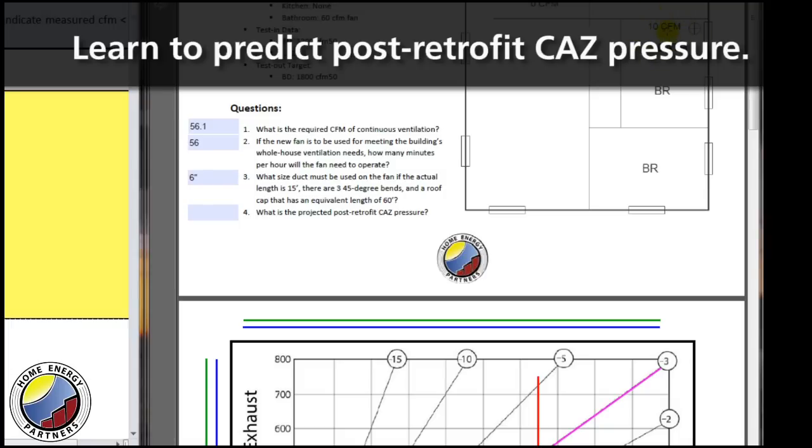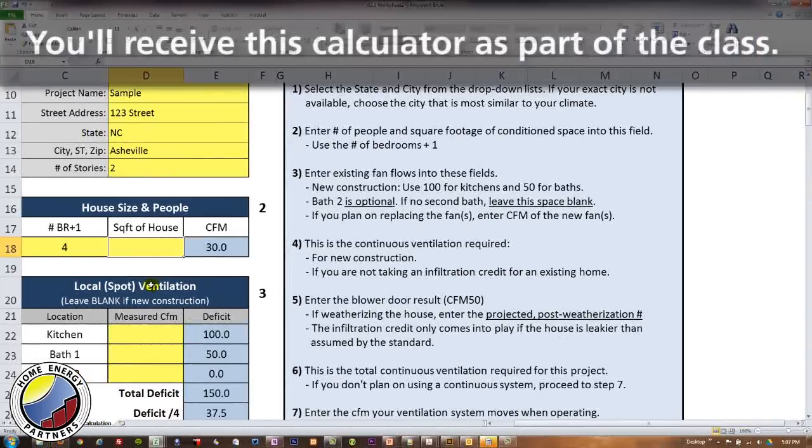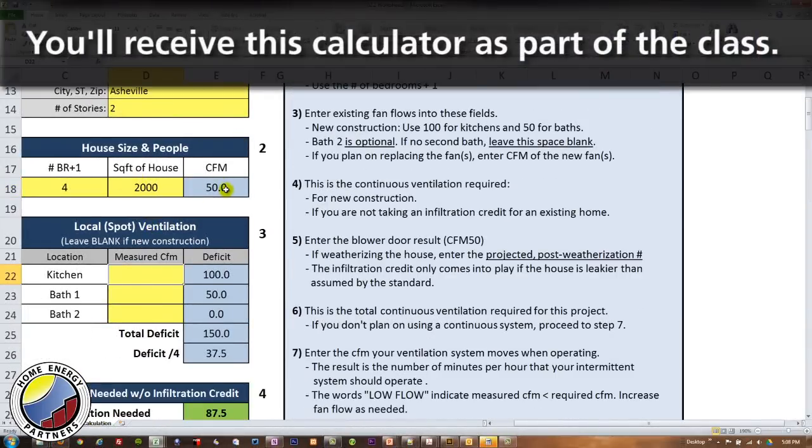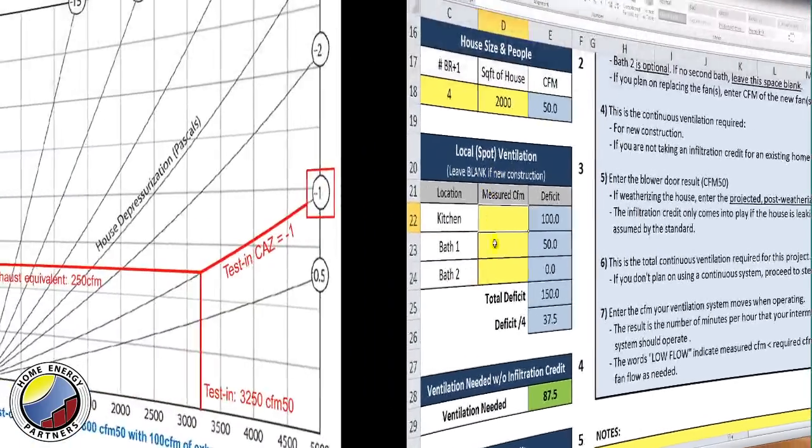I know that I'm installing a 60 CFM fan, so that means our exhaust quantity... maybe it's 2,000 square feet. I notice that everything is automatically calculating for me, so this is running through our base formula here of 7.5 CFM per person plus 1% of the square footage, which is 1,800 CFM at 50 pascals.